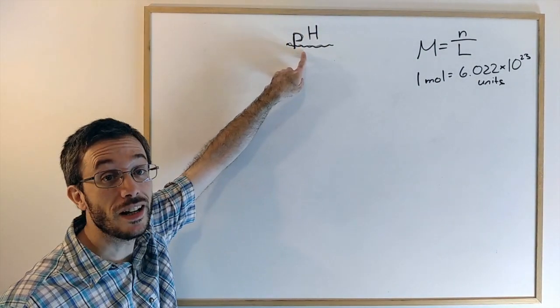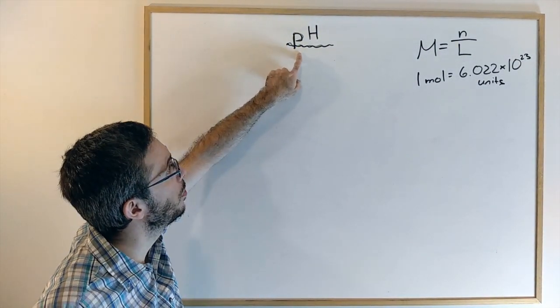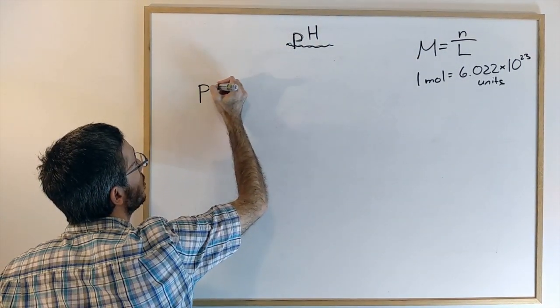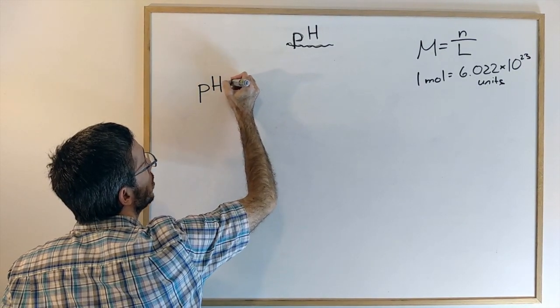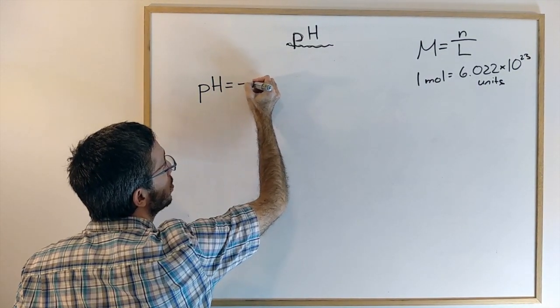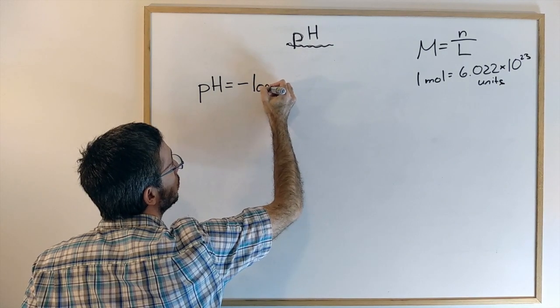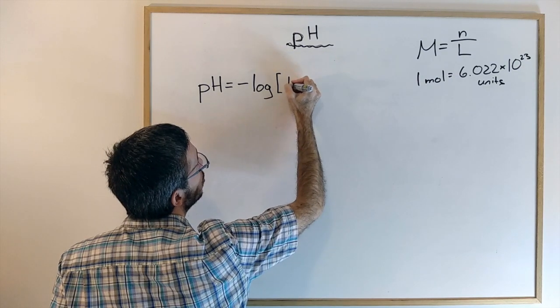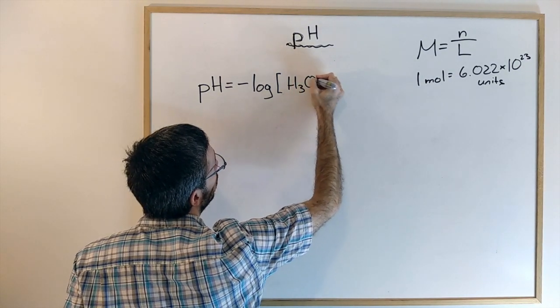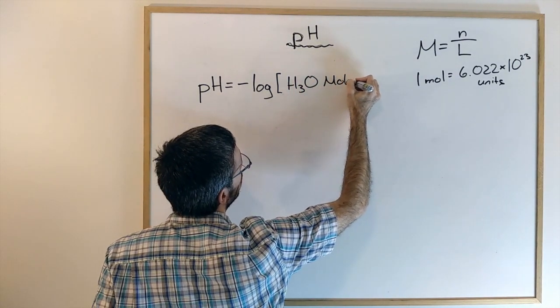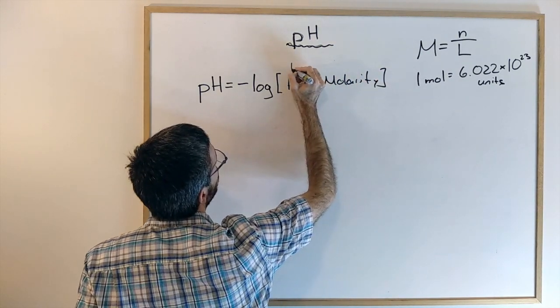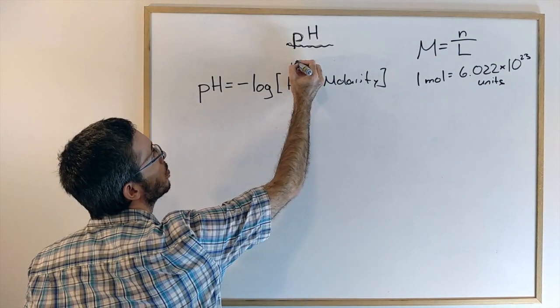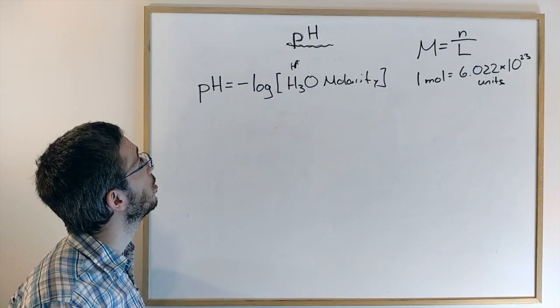Now, back to our pH. What is pH? pH is related to the molarity in the sense that the pH value, the number between 0 and 14, is calculated as minus the logarithm to the base of 10 of the H3O molarity or the H plus molarity. Some books call it the H plus molarity, some books call it the hydronium molarity.